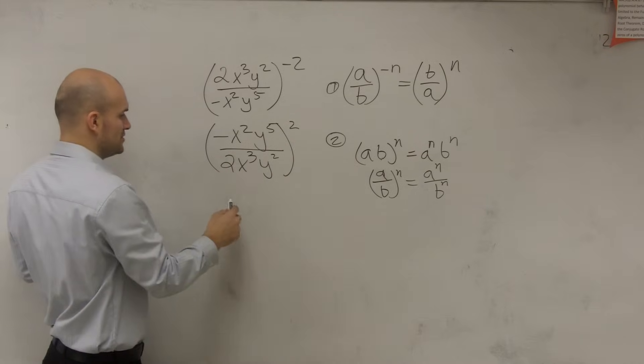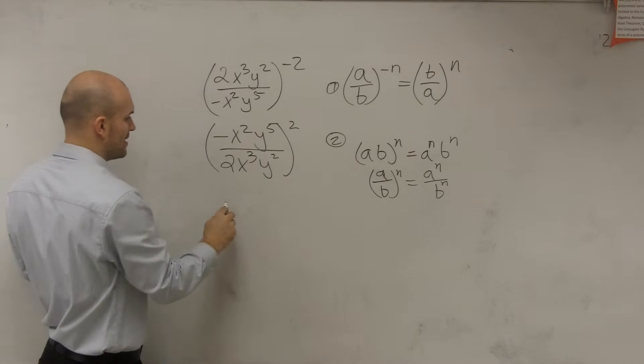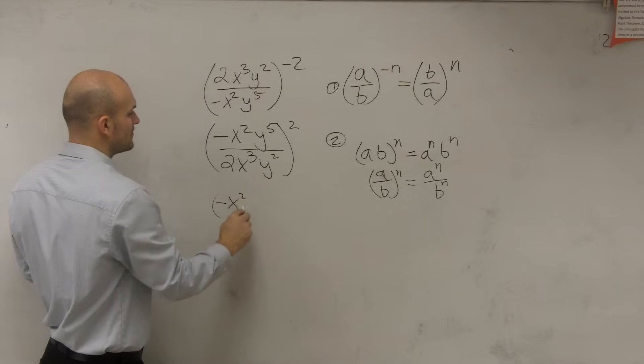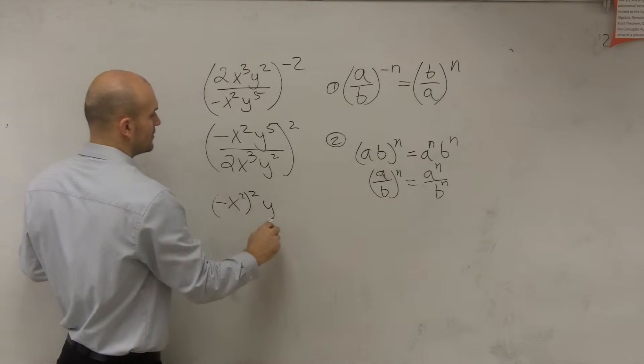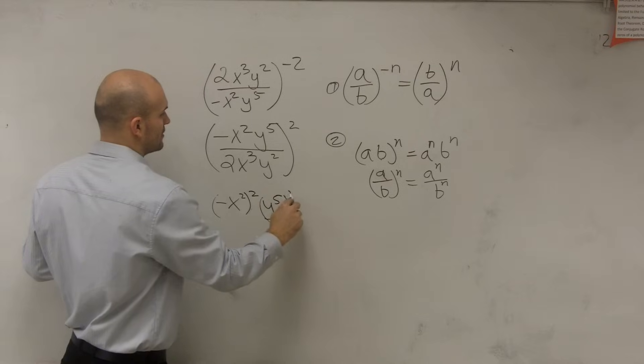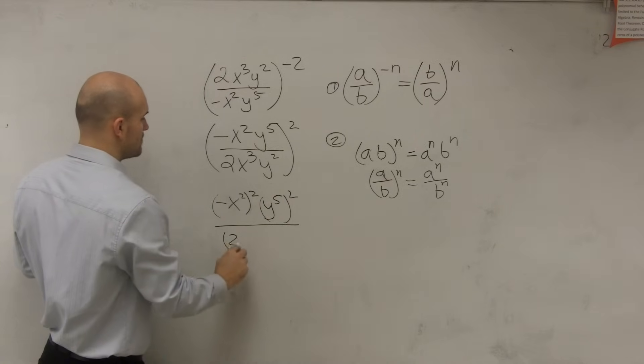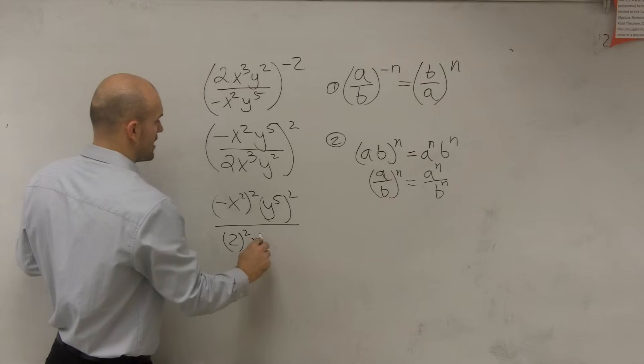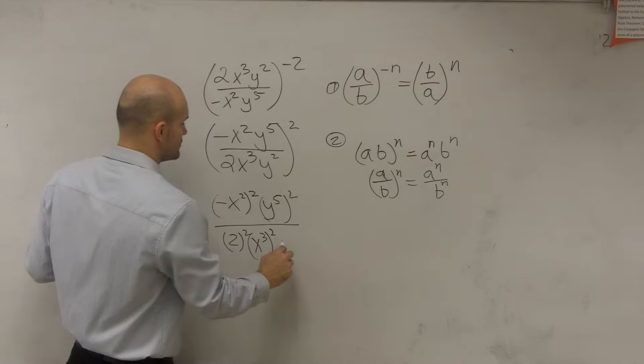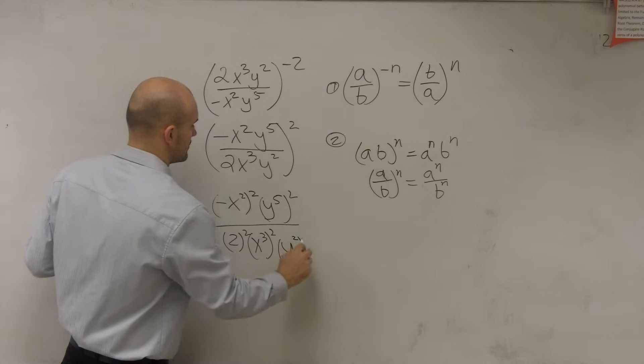So therefore, what I'm going to do is just rewrite everything to the second power. So negative x squared, squared, y to the fifth, squared, over 2, squared, x cubed, squared, and y squared, squared.